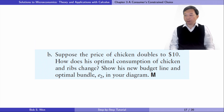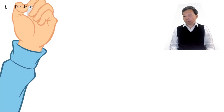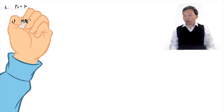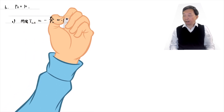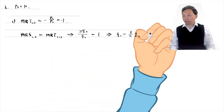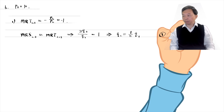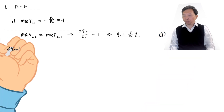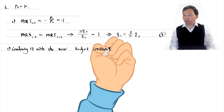In part B, suppose the price of chicken doubles to $10. How does his optimal consumption of chicken and ribs change? Show his new budget line and optimal bundle E2 in your diagram. With P2 at $10, the marginal rate of transformation changes to minus 1, while the marginal rate of substitution is unchanged. So the tangency condition equation becomes Q2 equals Q1 over 2. Combining it with the new budget constraint gives the new consumption bundle.